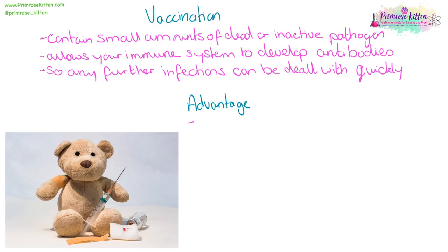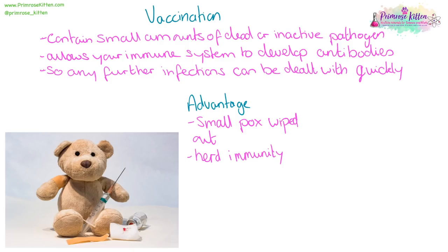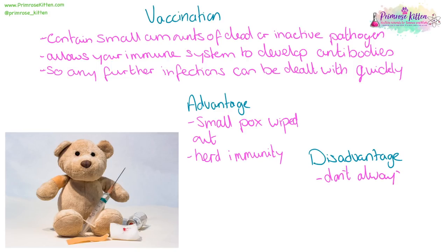The advantages are that a large number of diseases have been wiped out — for example, nobody gets smallpox or polio anymore. And we have herd immunity, which means if a large percentage of the population are vaccinated against a disease, even the small percentage who are not vaccinated or can't be for medical reasons are going to be protected because the disease will find it very hard to spread. The disadvantages are that they don't always work — the flu vaccine, for instance — and it can be painful with side effects.